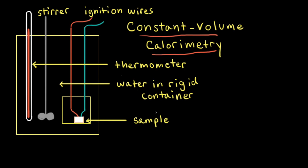First, the sample to be combusted is placed in a container that has some oxygen, and then there are some ignition wires that go into this little container here. The sample is ignited, and heat is given off by the combustion reaction.